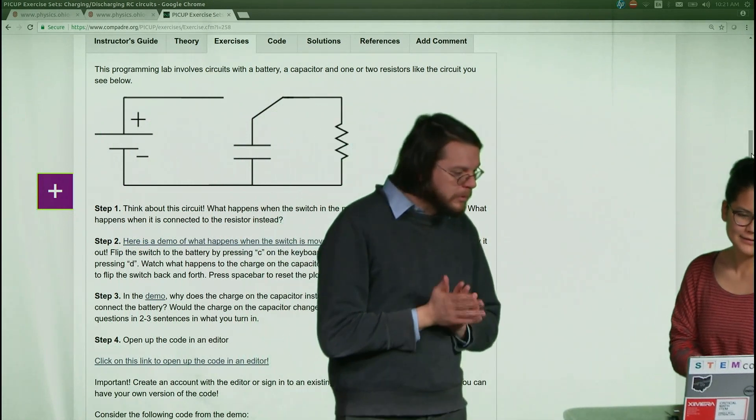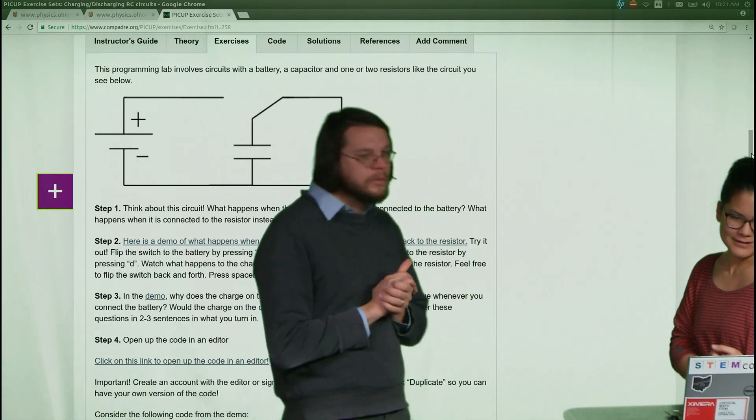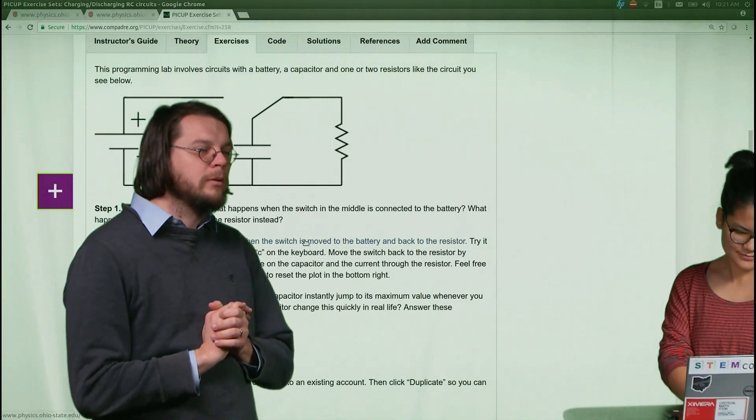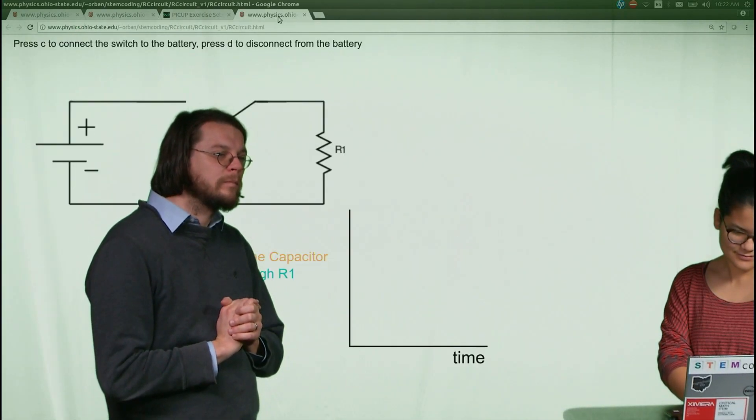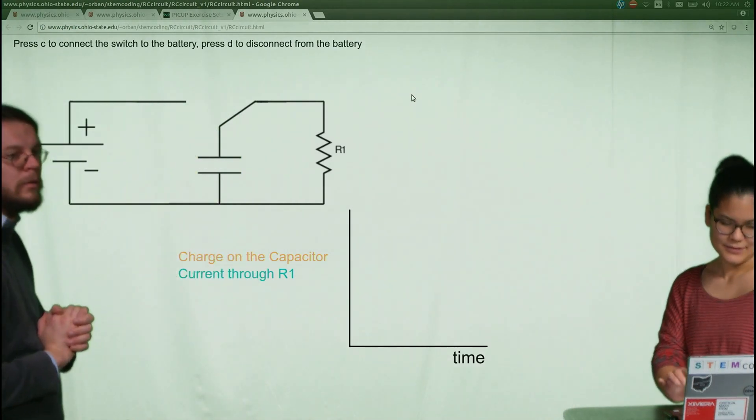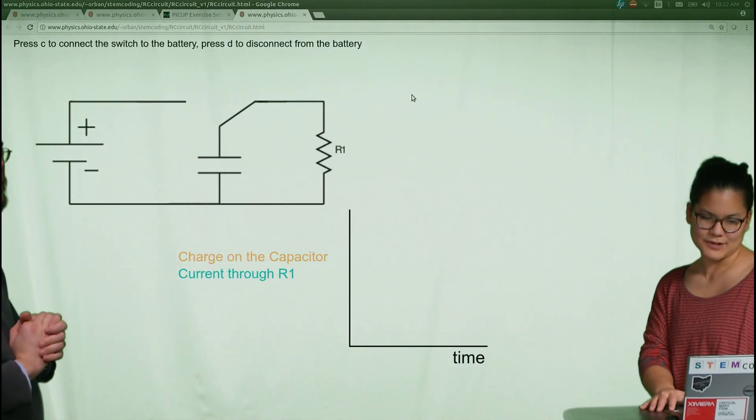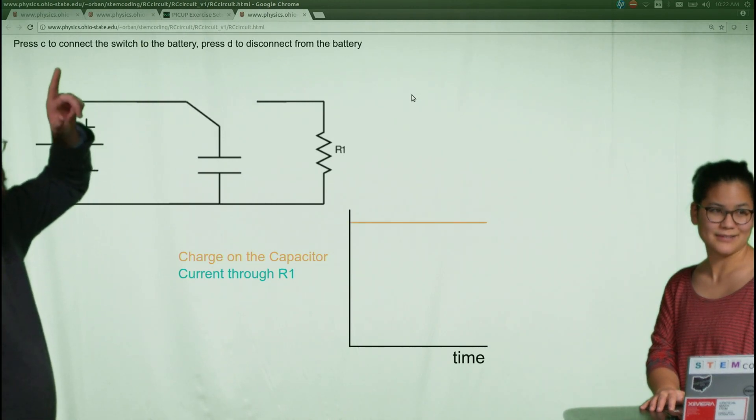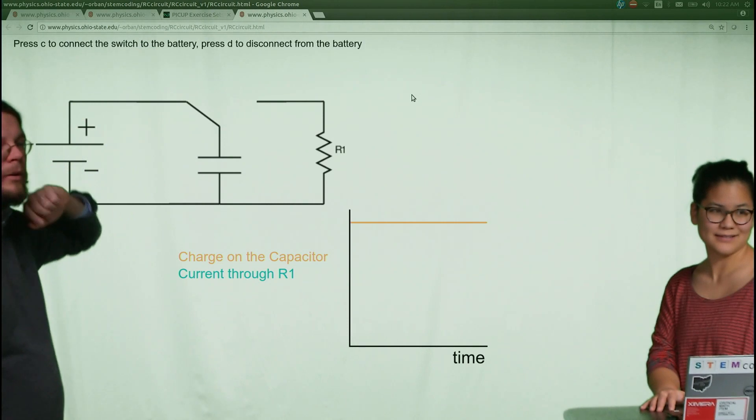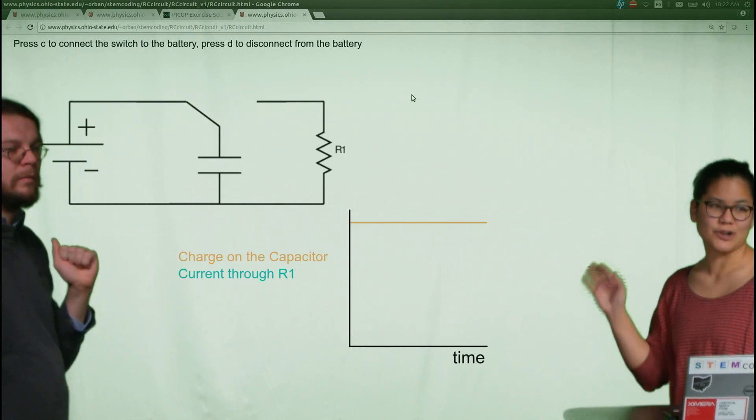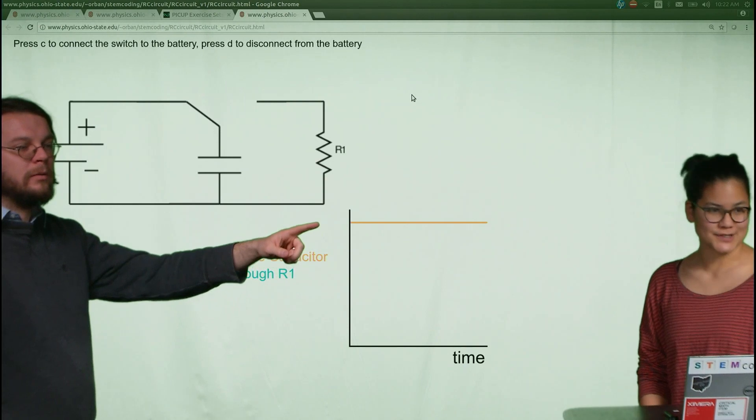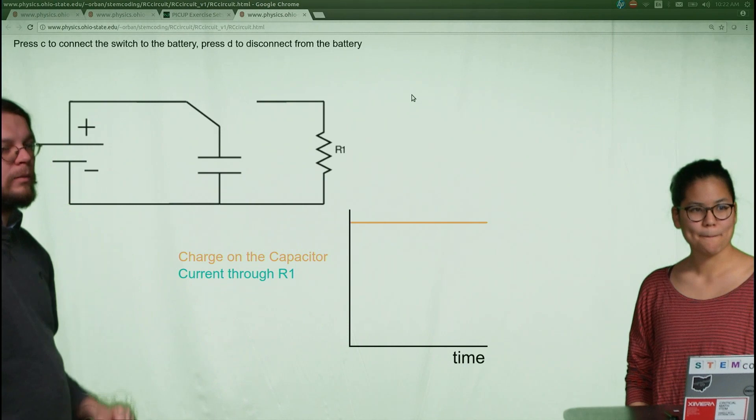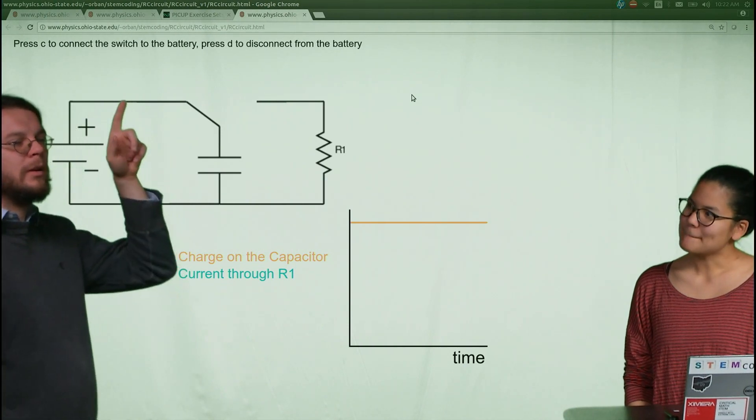It's going to discharge it through this resistor. What are we going to do first here? I think we can just look at the demo and what we're trying to do. Right now it's not very interesting. We press C to connect it to the battery. If you look at the directions here, we connected it to the battery. Now what happened? It charged the capacitor. This orange line used to be down at zero, but now it's all charged up now.